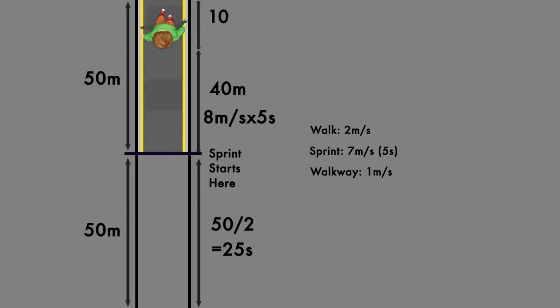So after the 5 seconds they're allowed to sprint, they'll have traveled 40 meters and have only 10 more to go. During those 10 meters they'd move at 3 meters per second relative to the ground, so that time would be 3.33 seconds, giving us a total time of 33.33 seconds.